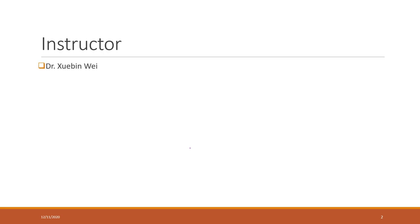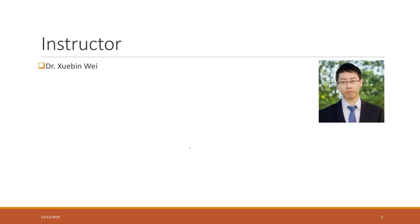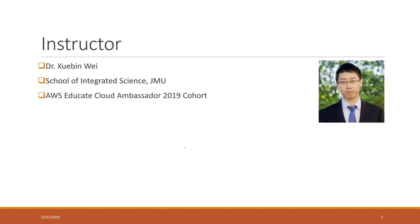I am the instructor of this class. My name is Shubing Wei. I am an assistant professor at the School of Integrated Science at GMU, and I am also an AWS Educate Cloud Ambassador. I have been using AWS for more than three years and I really enjoy it — especially now that we have the AWS Educate program, which provides free credits so we can learn how to use AWS.